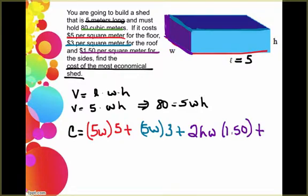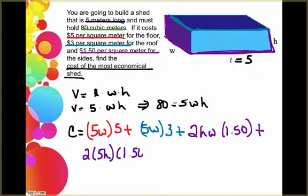And then we've got a front and a back. And the front and back are made up of five times h. And there's two of those. And then multiply by the cost. So now I'm ready to take that equation and start trying to simplify.